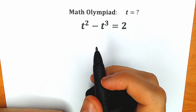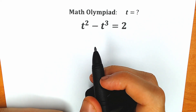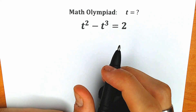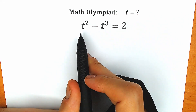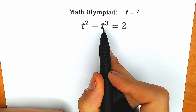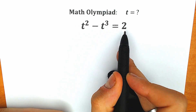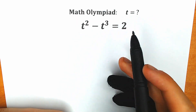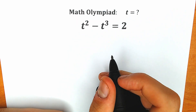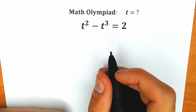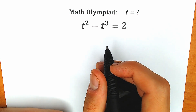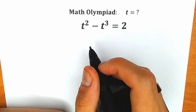Hello everyone, happy to see you here. Welcome back to my channel Hiya Mathematics. Today we have a very interesting question: t squared minus t cubed equals 2. We need to solve this question for t. If you have your answer or assumption, you can write it in the comments below, and then we will check our answer — it will be really interesting.